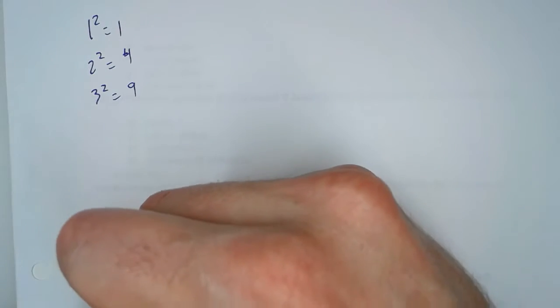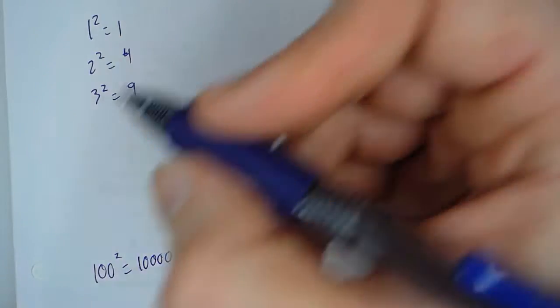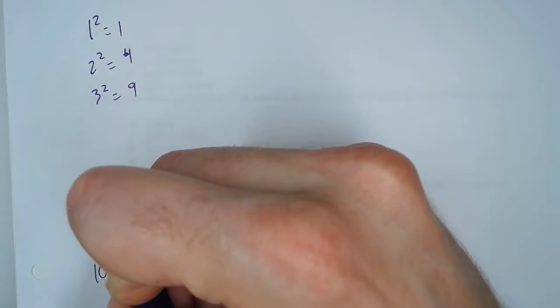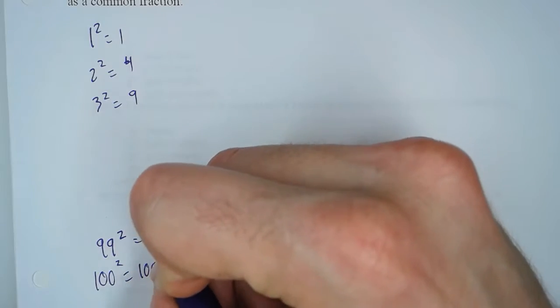Now, 100 squared is 10,000, and we don't include that one. But we do include 99 squared, and that's important for our answer. Because 99 squared is 9801.